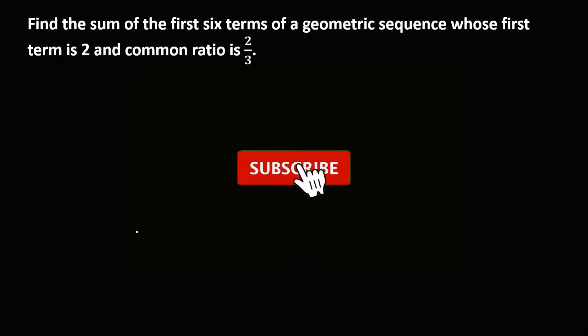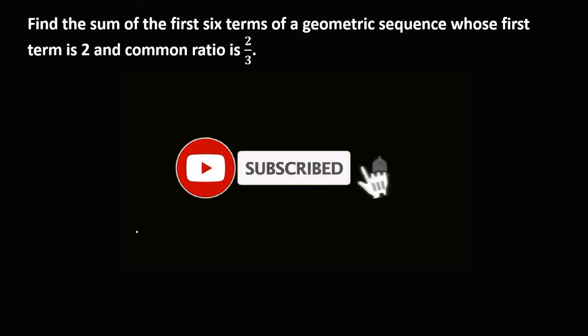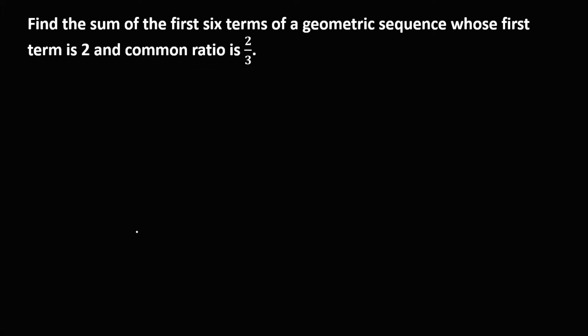Okay, so let's solve this problem. Find the sum of the first six terms of a geometric sequence whose first term is positive 2 and the common ratio is positive 2 over 3.